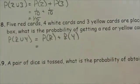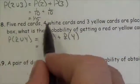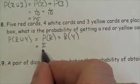So the probability of getting a red card would be five out of, well how many cards were there? Five and four is nine and three is twelve, so five twelfths.